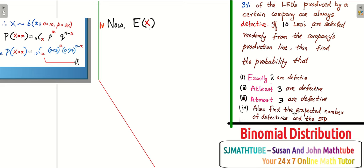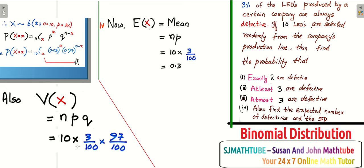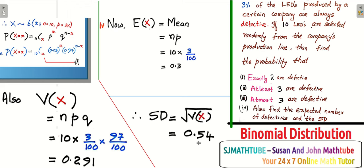Now the last one — the expectation. Expectation is nothing but the mean. When we discussed binomial distribution, we learnt that mean is N into P — you don't have to do the hard work of summation or integration, just use the formula N times P, which gives approximately 0.3. The variance is N times P times Q, which is 0.291. And finally, the standard deviation is the square root of the variance, which is 0.54.